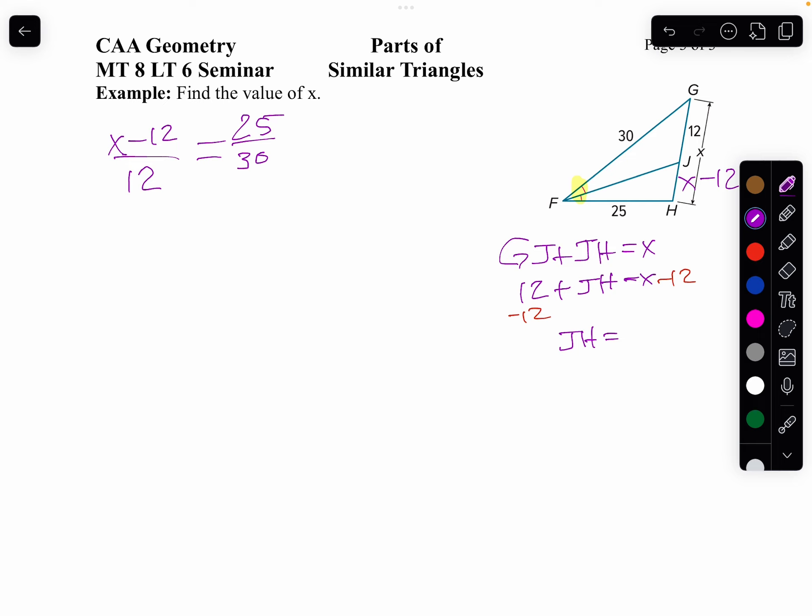So I will divide my numerator and denominator by 5, so I'm working with simpler numbers. So 25 divided by 5 is 5, 30 divided by 5 is 6.